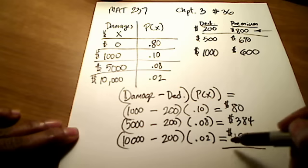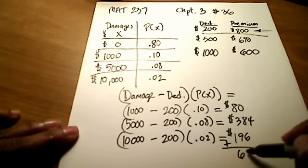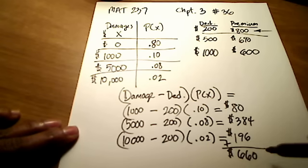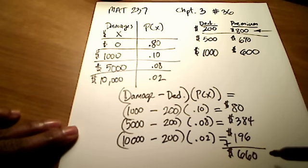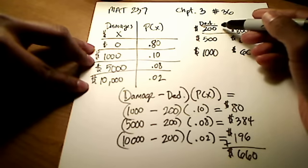OK, so if I add all three of these numbers together here, you'll see that I get a total of $660. And this number right here represents the total cost to the insurance company for these potential damages at a $200 deductible.